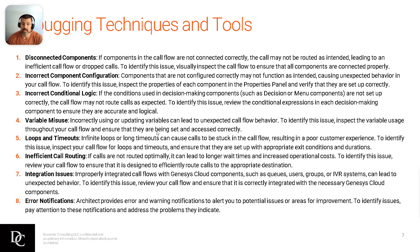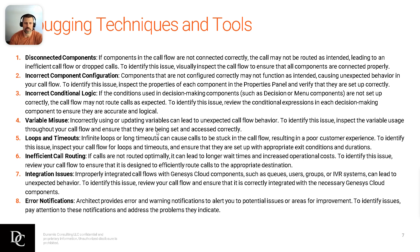Inefficient call routing can manifest in many different ways. Let's say you have a couple of menus — a customer presses option one to go to sales, then the sales menu asks them to press one for new sales or press two for an existing account. If they press option two and it routes somewhere other than the right queue — back to the main menu, or to billing — that's a problem. Customers looking for new sales want to talk to someone right away; they don't want to navigate further menus.